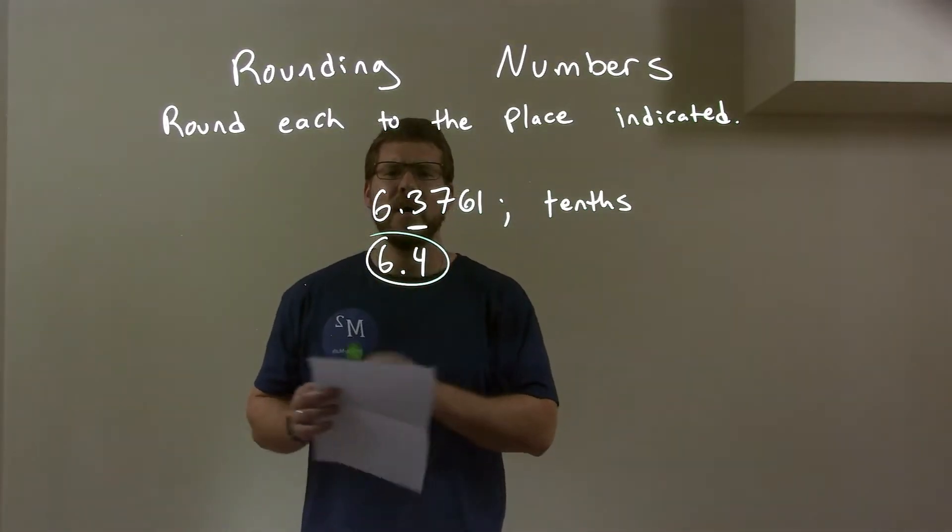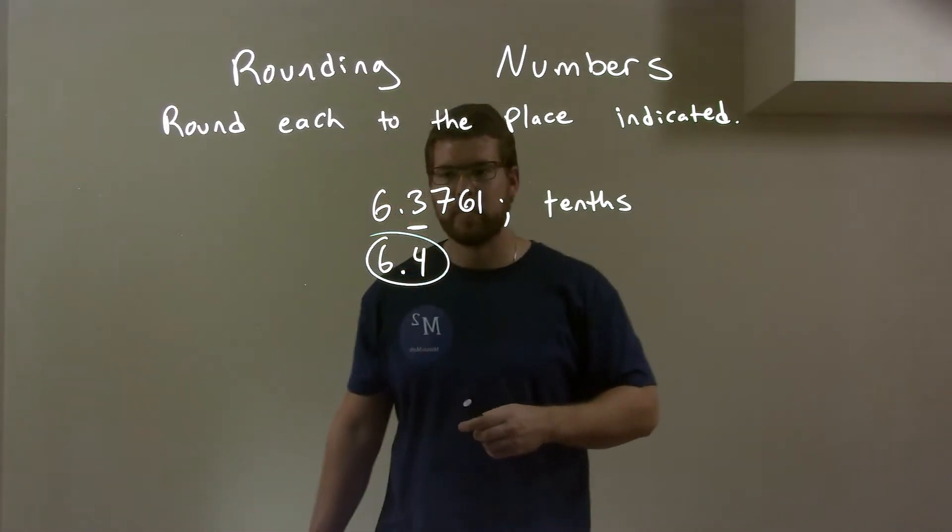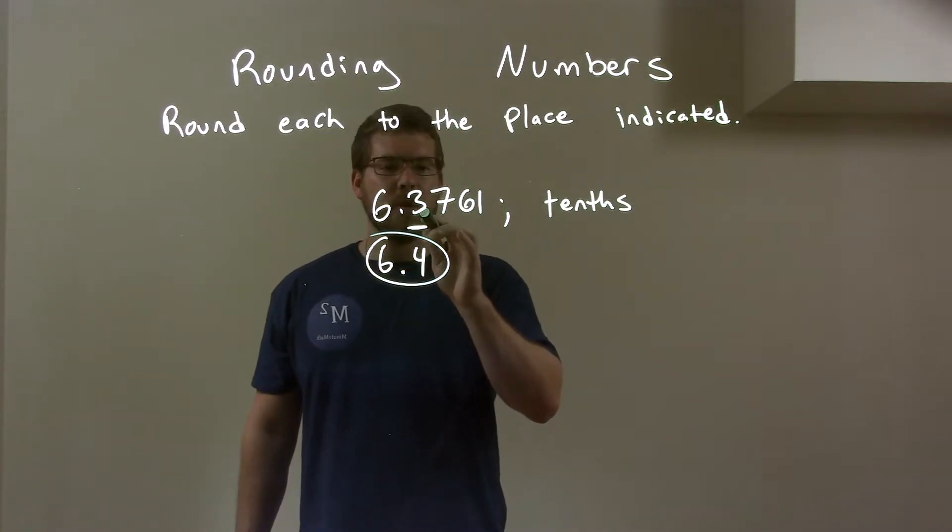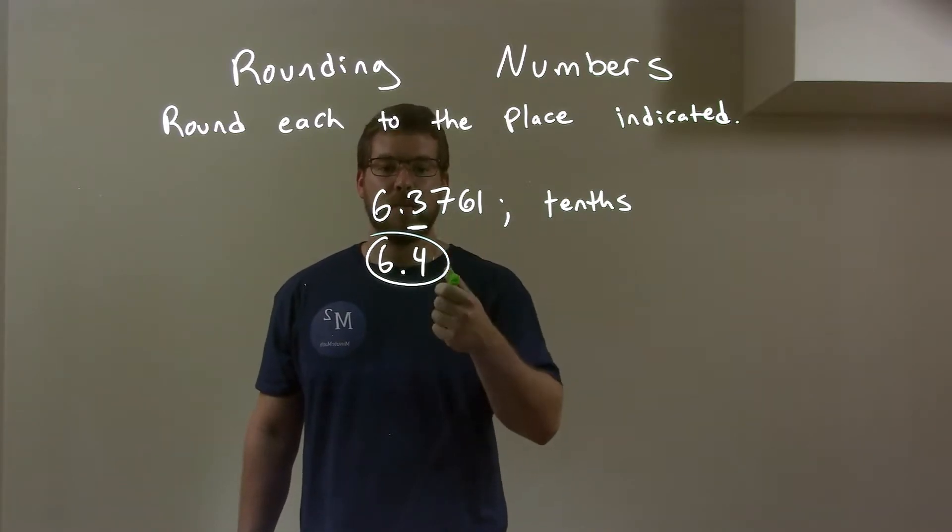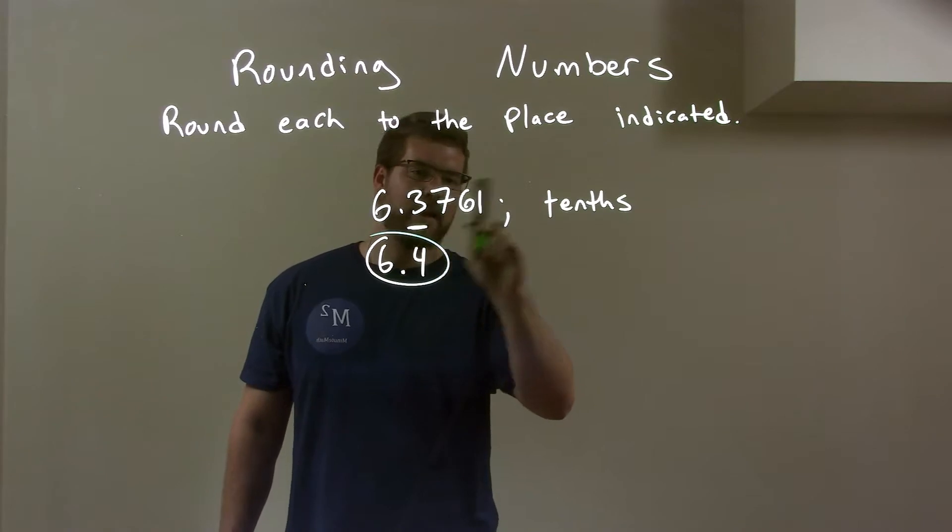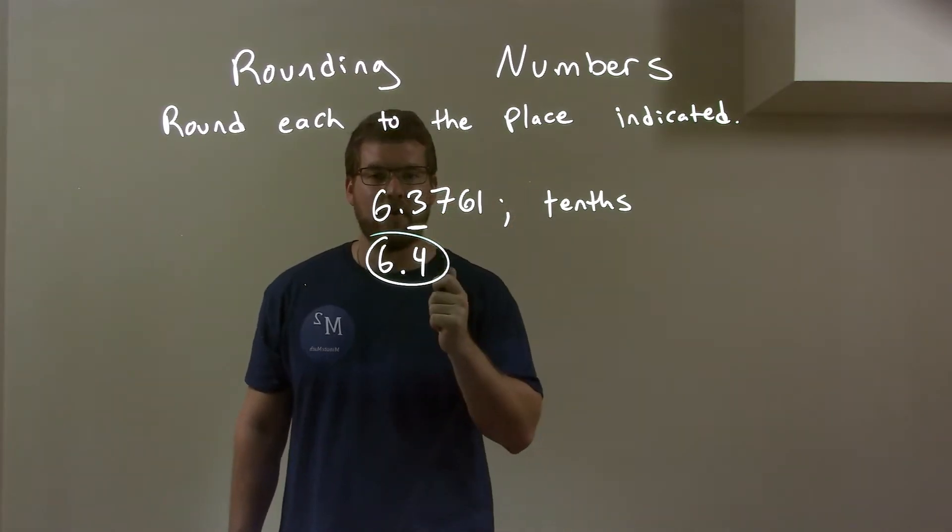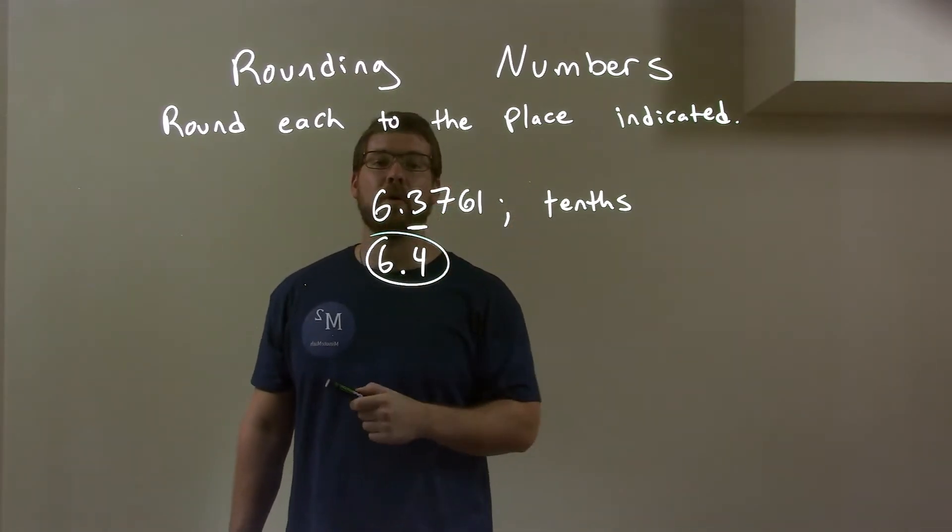So a quick recap. We're given 6.3761. The 3 in the tenths place, I look to the right and see a 7. The 7 causes the 3 to round up to a 4. Bring down the 6, everything else to the right goes away, and we have our final rounded answer of 6.4.